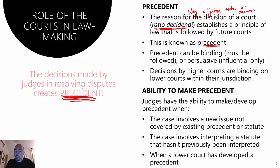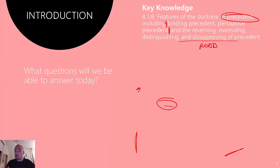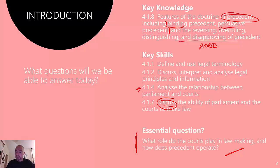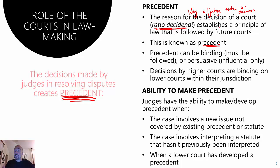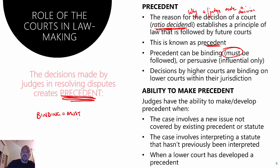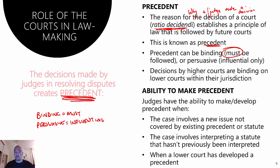Some important Latin terms we need to know are the concept of ratio decidendi — the reasons for the decision — exactly why a judge made a decision. Judges have to explain this; they write down all their decisions. The ratio decidendi establishes a principle that is followed in future cases by future courts, whether it's the same court or others. This is what precedent is. Precedent comes from the reasons for the decision, and those reasons must be followed in future cases. We split this into two categories: binding precedent and persuasive precedent. Binding equals must be followed; persuasive is influential but does not have to be followed.